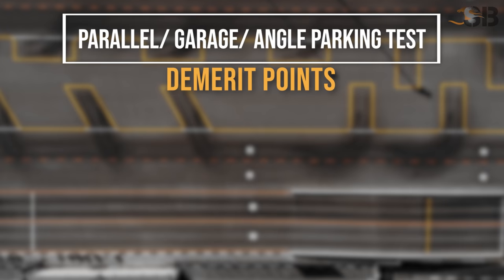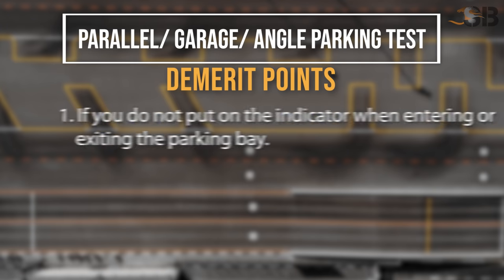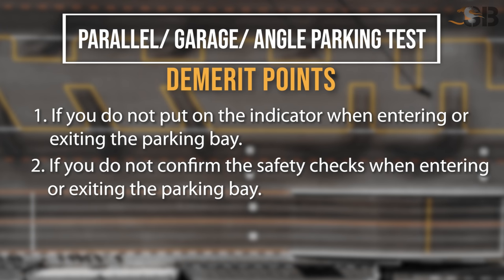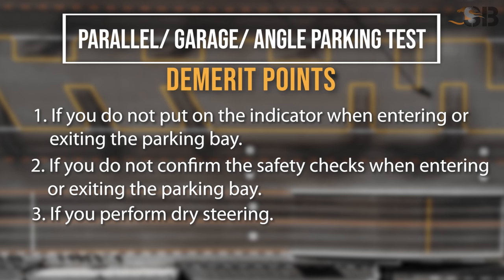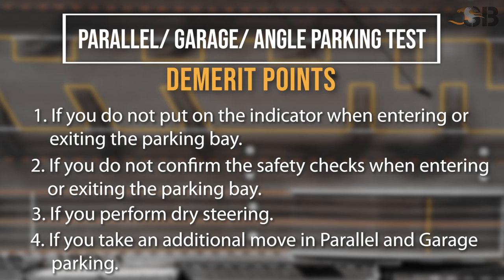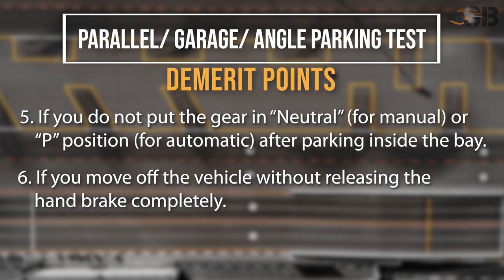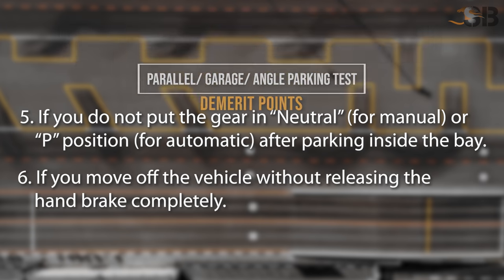Two demerit points are recorded for each of the following minor faults for parking tests. Number 1: if you do not put on the indicator when entering or exiting the parking bay. Number 2: if you do not confirm the safety checks when entering or exiting the parking bay. Number 3: if you perform dry steering. Number 4: if you take an additional move in parallel and garage parking. Number 5: if you do not put the gear in neutral for manual or P for automatic after parking inside the bay. Number 6: if you move off without releasing the handbrake completely.